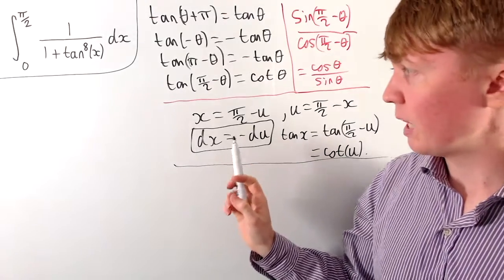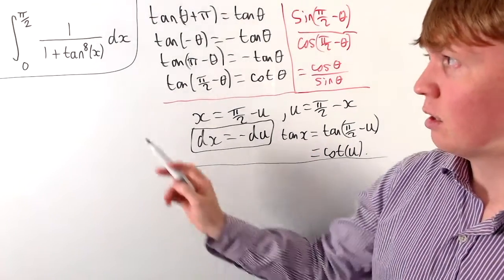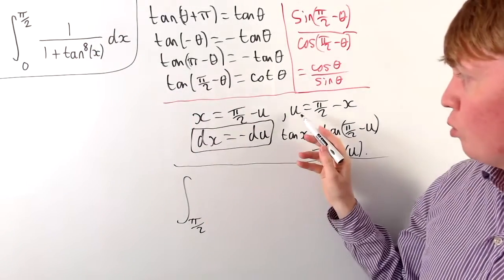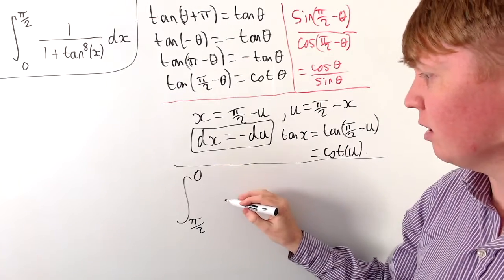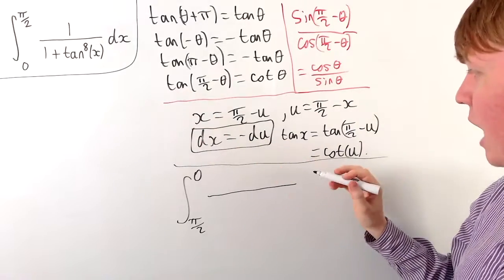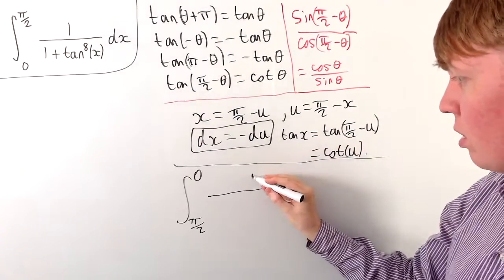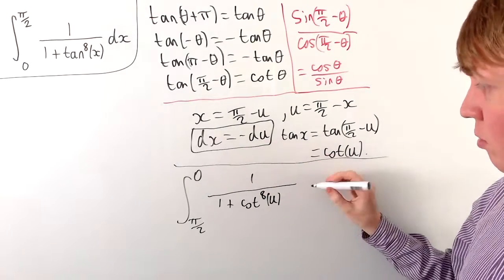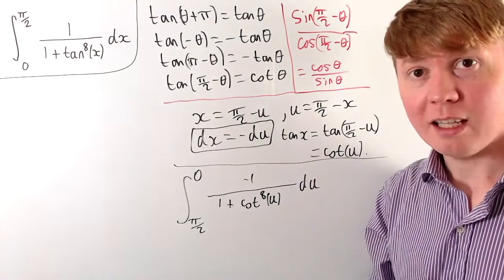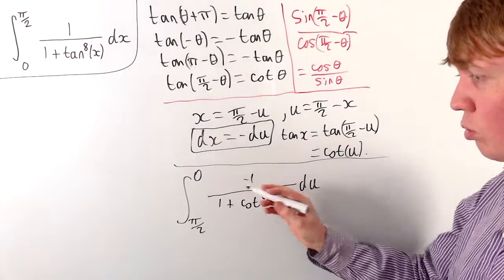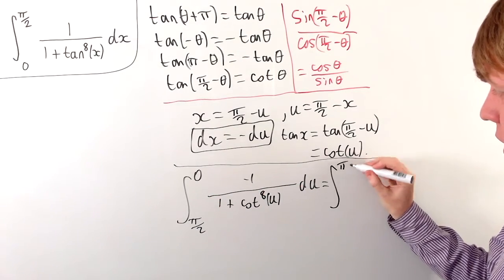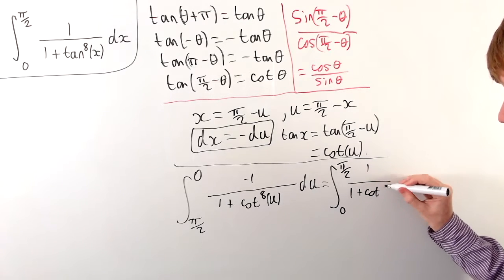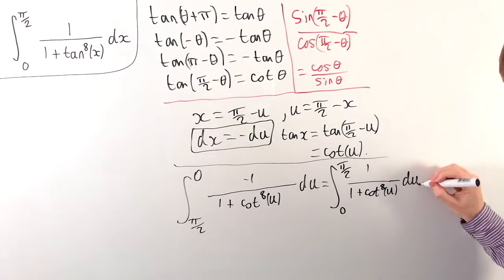Applying this substitution u = π/2 − x: when x = 0, u = π/2; when x = π/2, u = 0. Our integrand 1/(1 + tan⁸x) becomes 1/(1 + cot⁸u), and dx = −du. Introducing the negative sign and reversing the bounds, we can flip the order of integration, giving us an integral from 0 to π/2 of 1/(1 + cot⁸u) du.